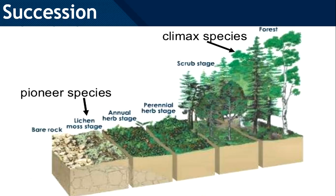This process of succession can actually occur as a result of the life functions of plants and animals. For example, trees can grow taller and spread their branches, shading locations that were once sunny, so plants that require sunlight can no longer thrive in the area and may have problems.